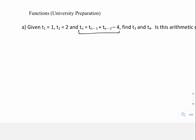So if I wanted to find t3, according to this formula, I'm replacing n with 3, so I'm going to have t of 3 minus 1 plus t of 3 minus 2 minus 4. Let me just evaluate these numbers. So I have t of 2 plus t of 1 minus 4.